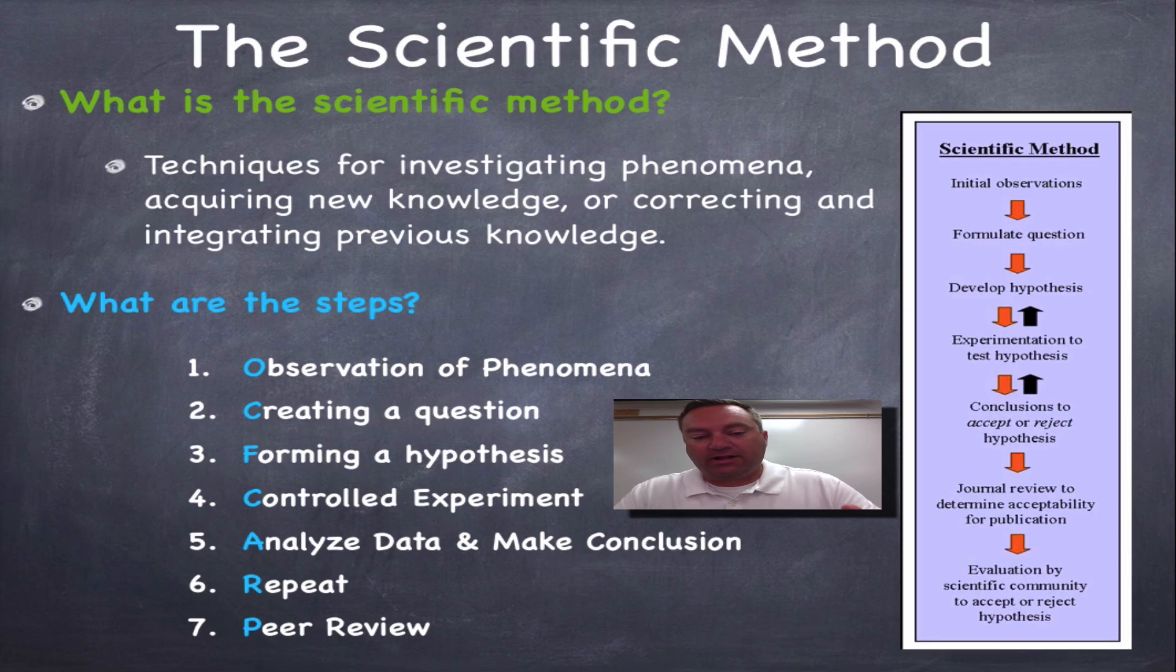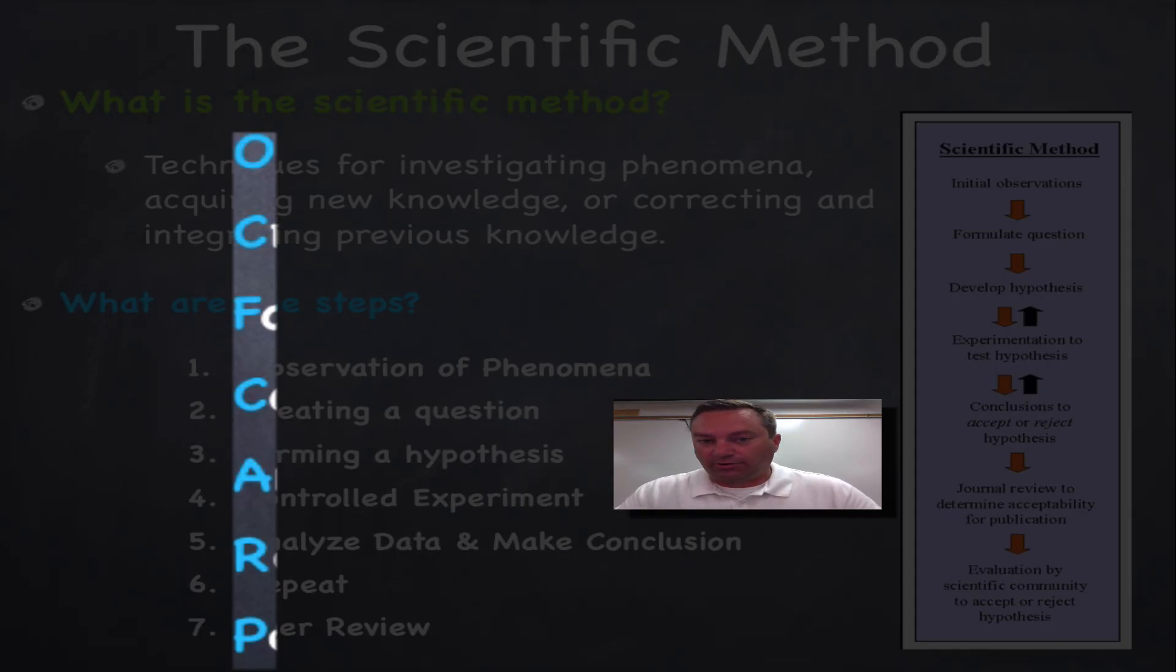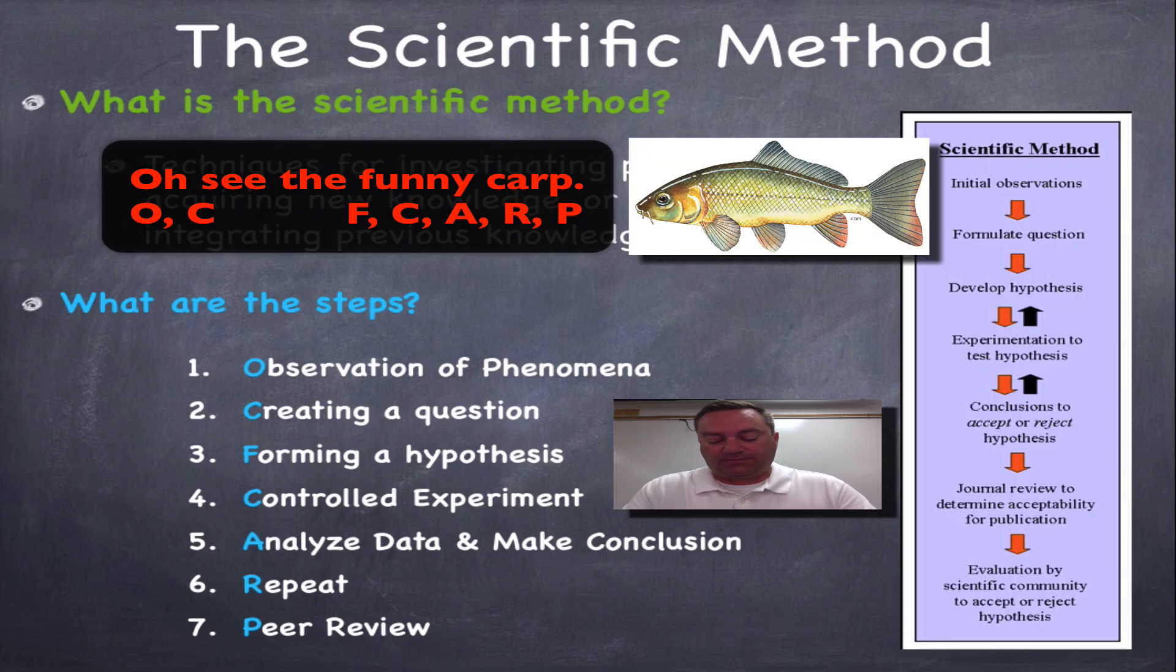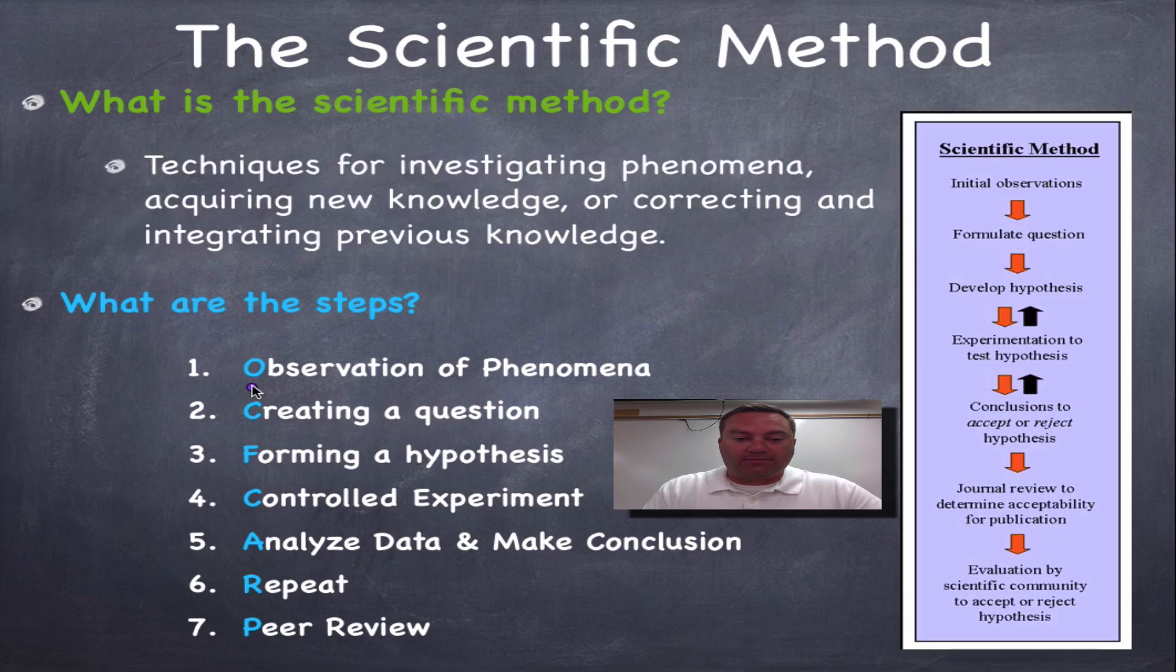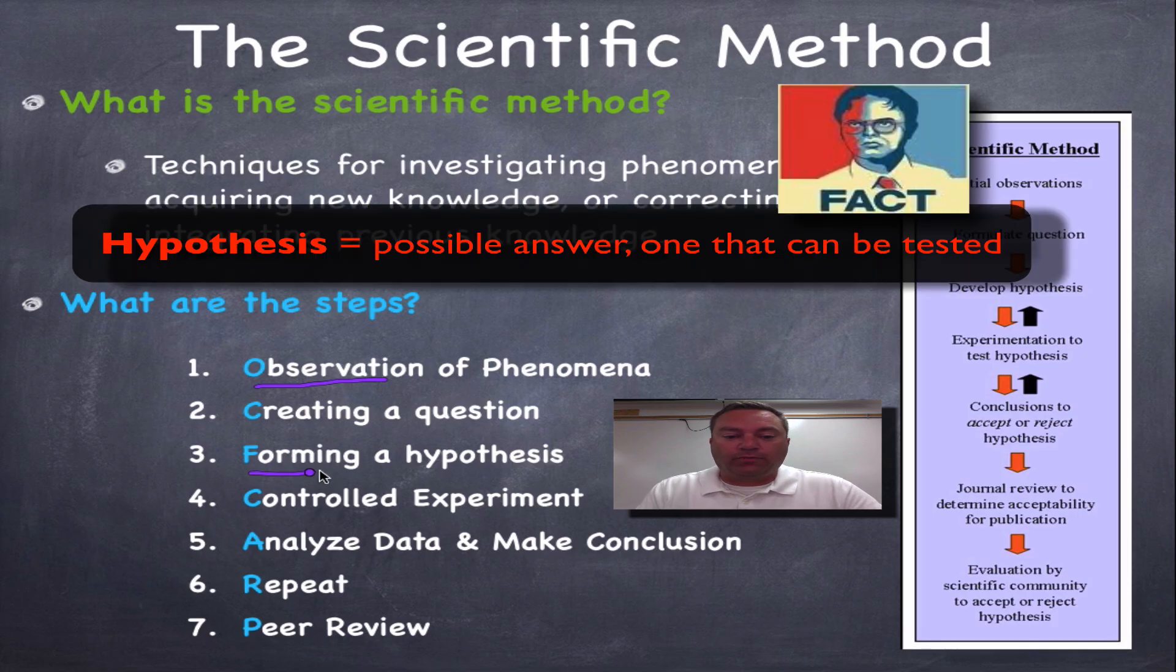You'll notice that I have the first letter in each step in the color blue, because I have a very funny mnemonic device to help you remember the steps of the scientific method. It's called OC, the funny carp. The O stands for observation of phenomena, and phenomena is basically the stuff that happens out in the world. C for creating a question. Now, the F is forming a hypothesis.